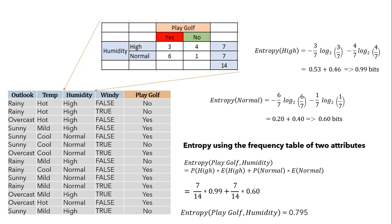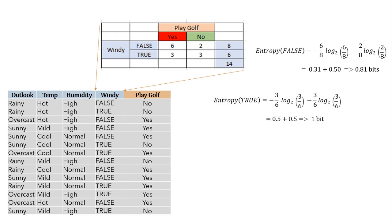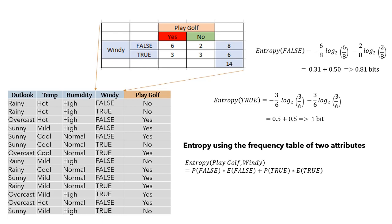We are only left with the windy column. Windy has false and true values, where false has 6 yes and 2 no, and true has 3 yes and 3 no. Entropy for false: (6/8)·log(6/8) − (2/8)·log(2/8) = 0.81. True has equal yes and no, so entropy is 1. Entropy for the complete windy column: (8/14)·0.81 + (6/14)·1 = 0.88.